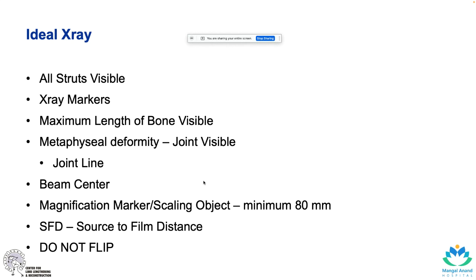For metaphyseal deformities, the joint should be visible so that you can mark the joint line well. Beam center should be marked with a radiopaque marker. One should have a magnification marker or scaling object, a minimum of 80 millimeters, preferably 100 millimeters onwards.